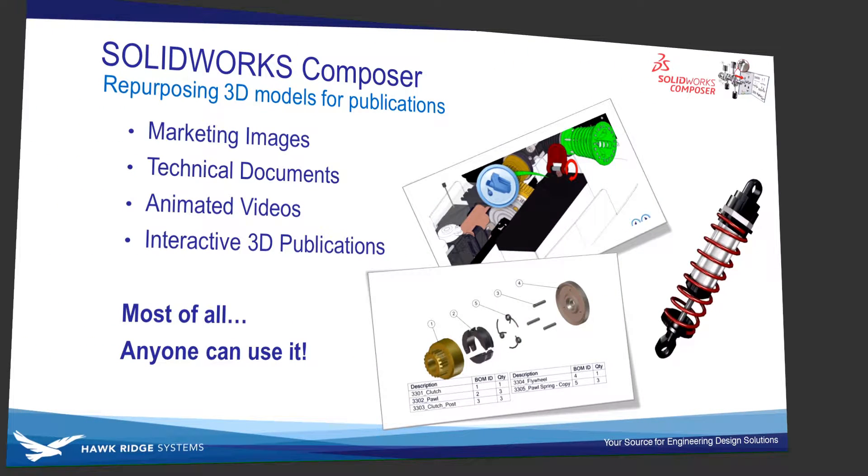The top four industry outputs are marketing and technical images, available in both vector and raster outputs, technical documents such as assembly and operation manuals, animated videos for marketing or procedural operations, and interactive 3D publications for shop floor assembly and online parts lists.